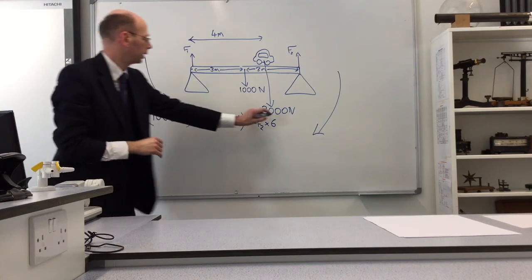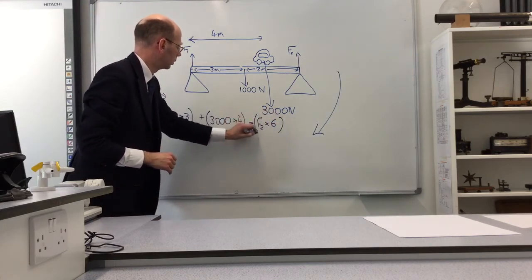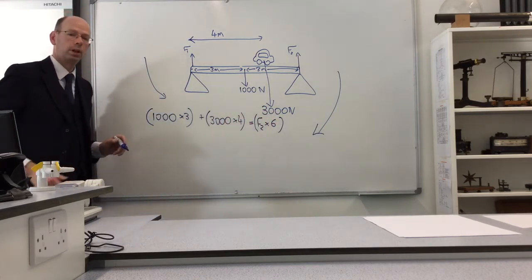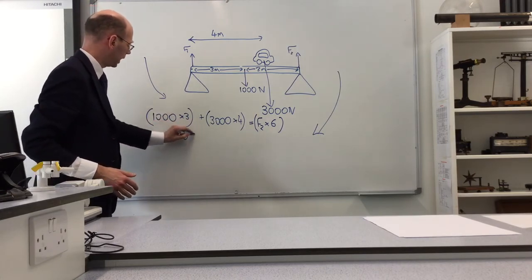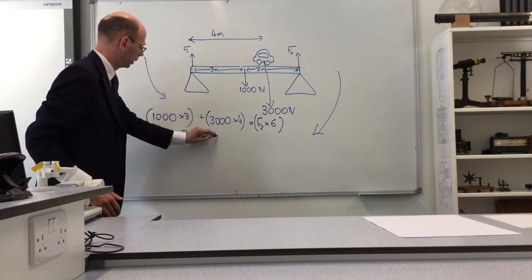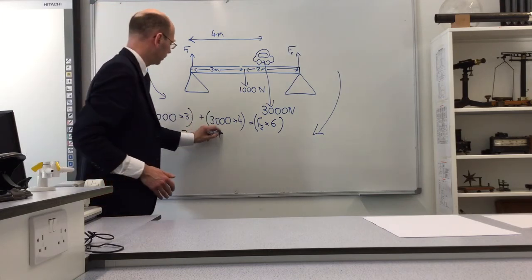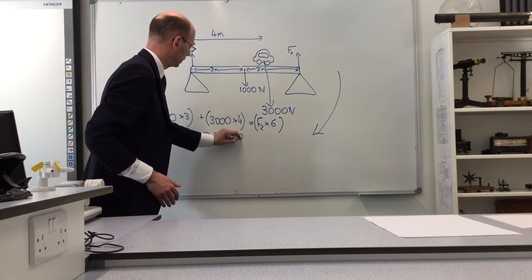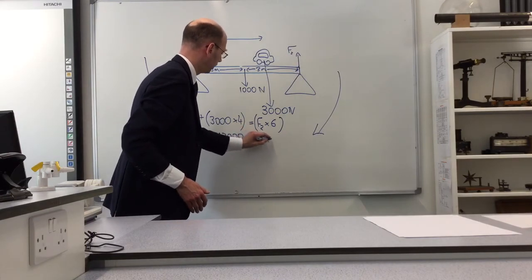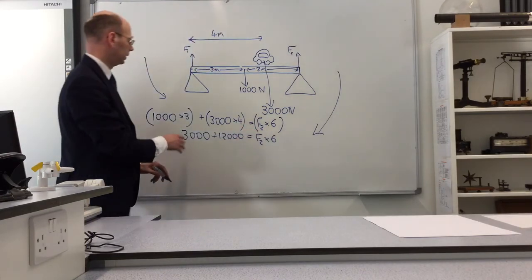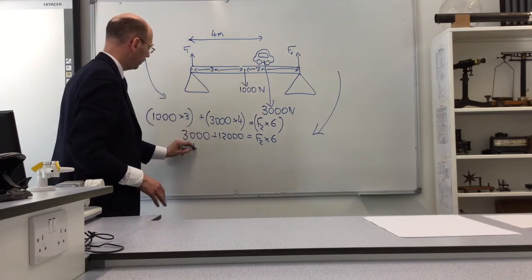That's our little equation for this situation. Let's see if we can solve that. We've got 3000 there, plus 12000 there, and that's equal to F2 times 6. 3000 plus 12000 makes 15000.